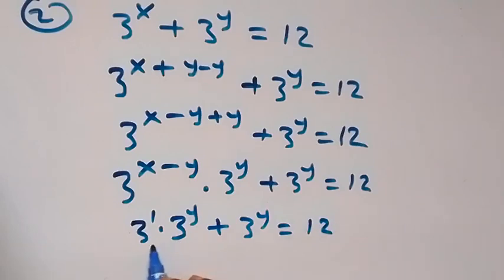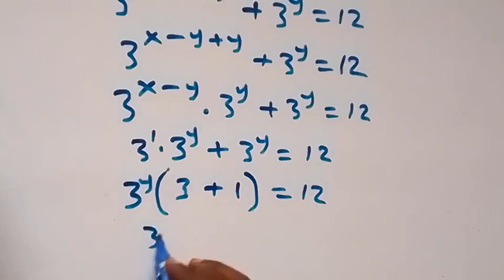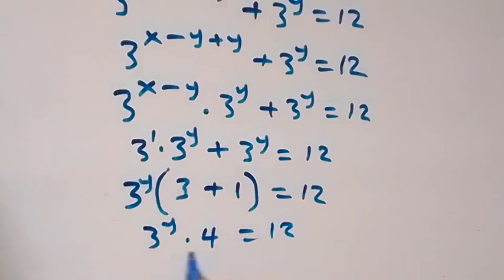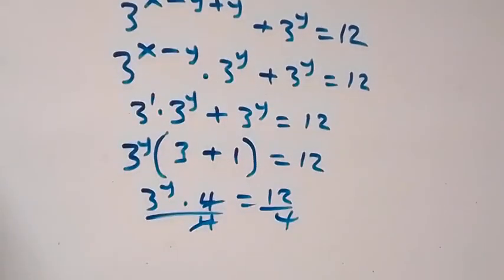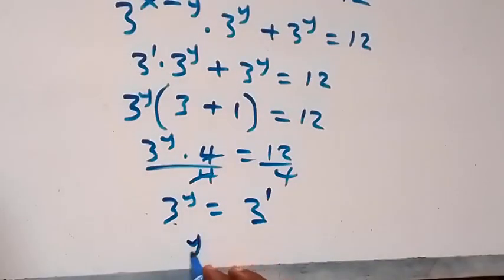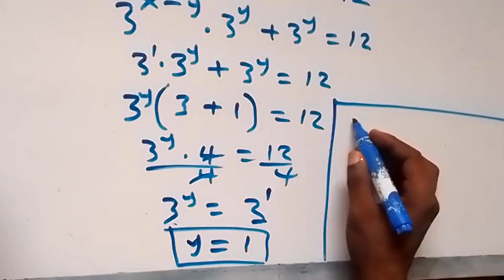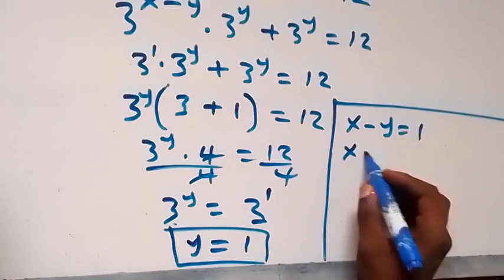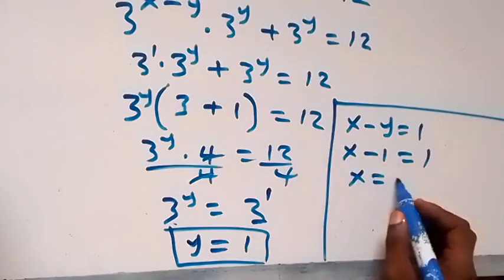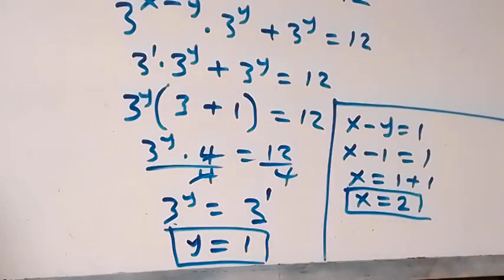We factor 3 raised to power y out, giving us 3 raised to power y times (3 plus 1) equals 12, which is 3 raised to power y times 4 equals 12. Dividing both sides by 4, we get 3 raised to power y equals 3, so y equals 1. Then from equation 3, x minus 1 equals 1, so x equals 2. We have the value of x equal to 2 and y equal to 1.